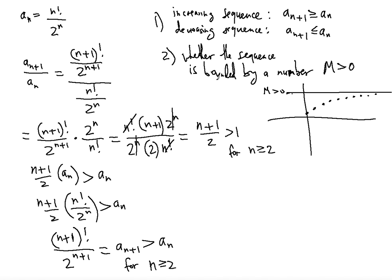Now we have to show whether the sequence is bounded by a number m greater than 0 — whether, as the graph suggests, there is a line that serves as a boundary. Most likely the sequence will converge to that boundary number if the sequence can indeed be bounded by it. So let's investigate that.